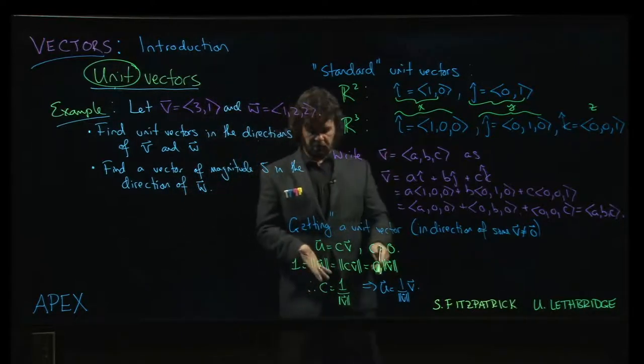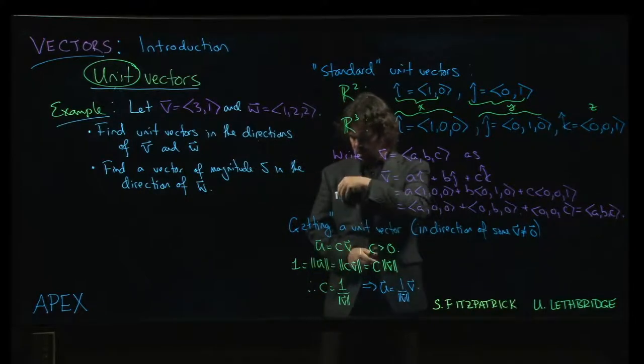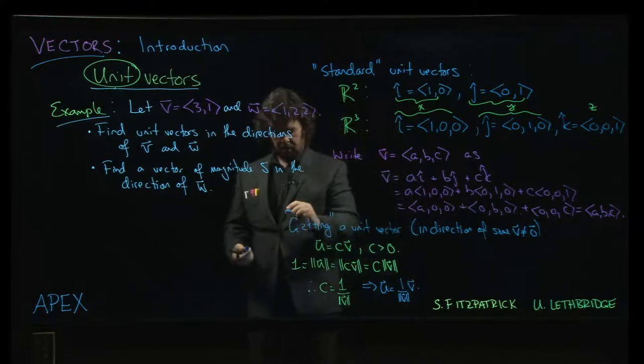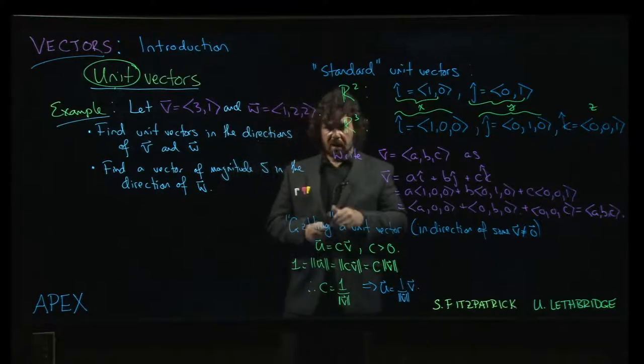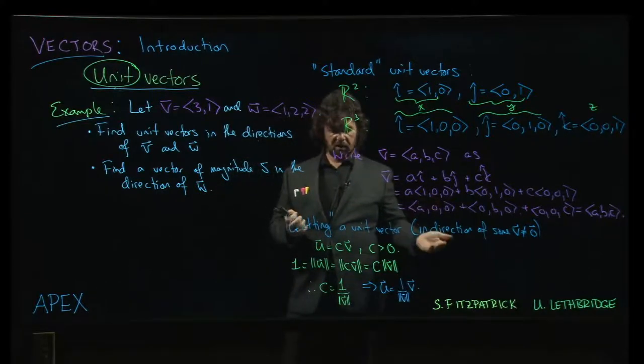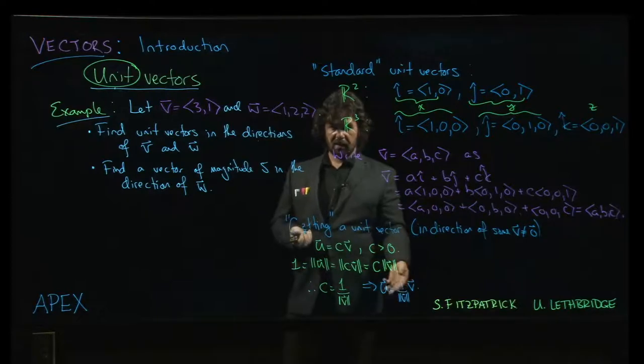We have the prescription for doing so down here. I accidentally erased my quotation mark. So, to get a unit vector in the direction of a given vector, we simply multiply by 1 over the magnitude of the original vector. That's pretty straightforward.